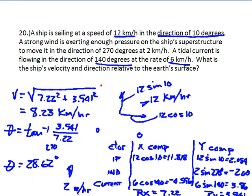So our ship, instead of actually moving the 12 kilometers, it's really only moving 8.23 kilometers because of the wind and the current. And it's moving at 28 degrees instead of the 10 degrees, again, because of the wind and the current. No more ships. I'm done with ships. This is the end of this lecture.